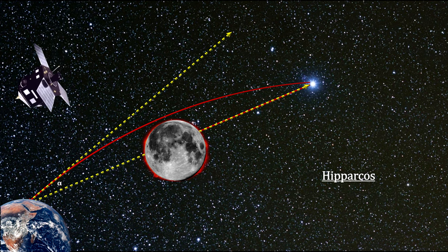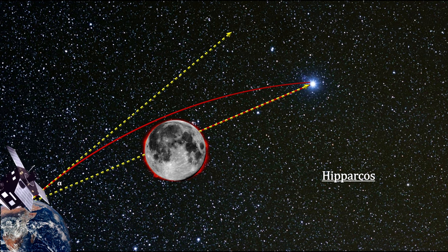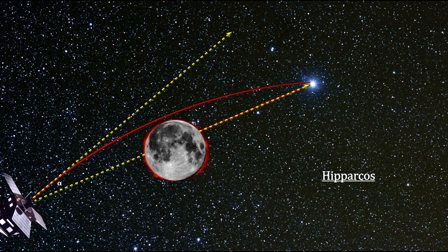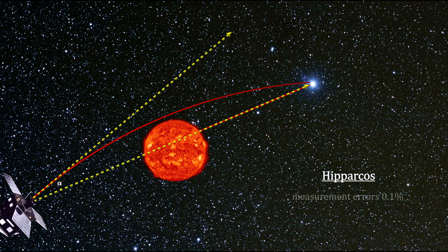For example, the European Space Agency's Hipparchus satellite, from 1989 to 1993, designed to measure parallax distances to 100,000 stars, charted the positions of stars so accurately that no eclipse was needed to see the effect of the Sun's gravity. They produced numbers with only a 0.1% error.